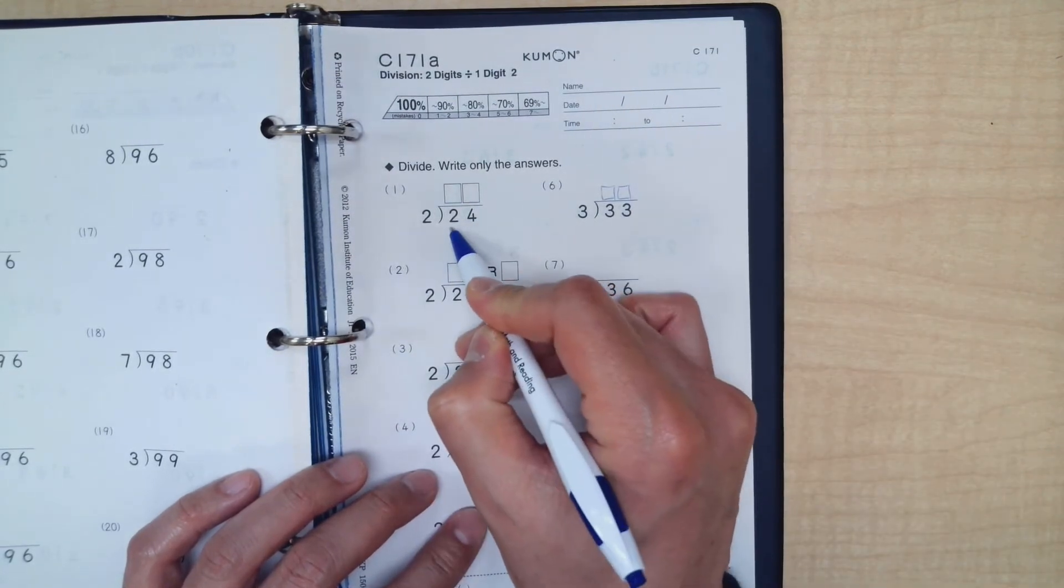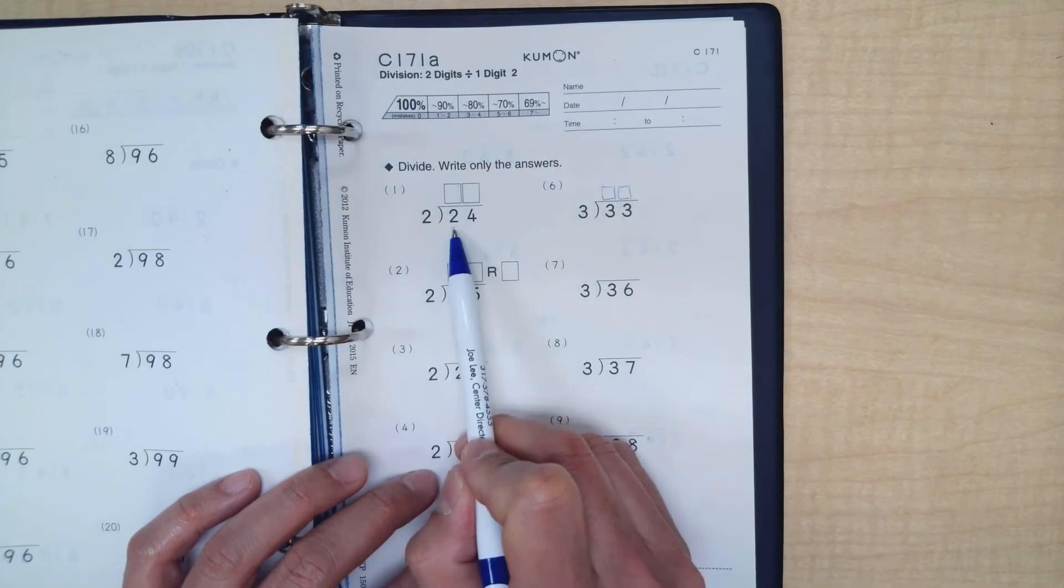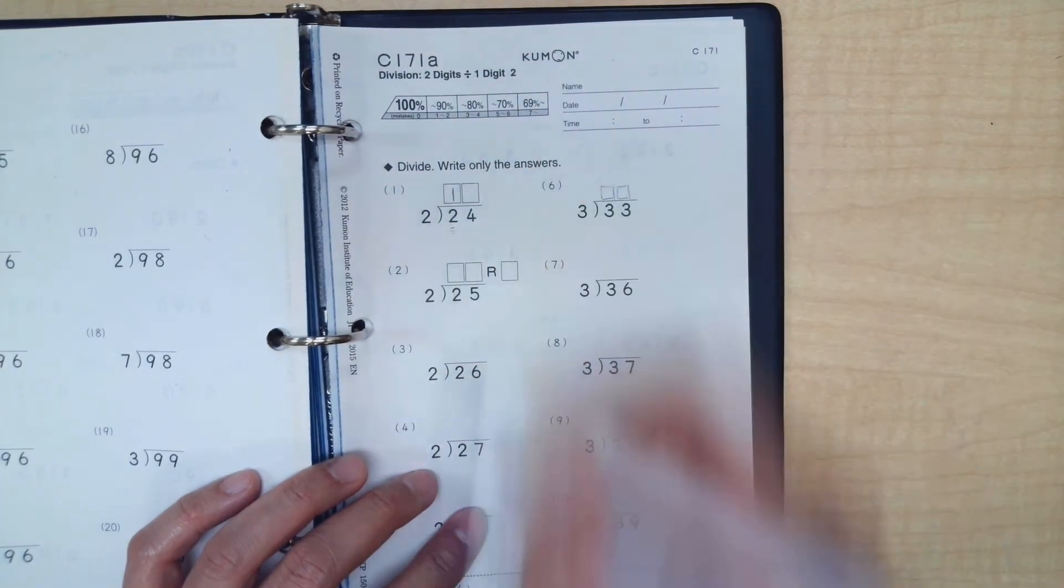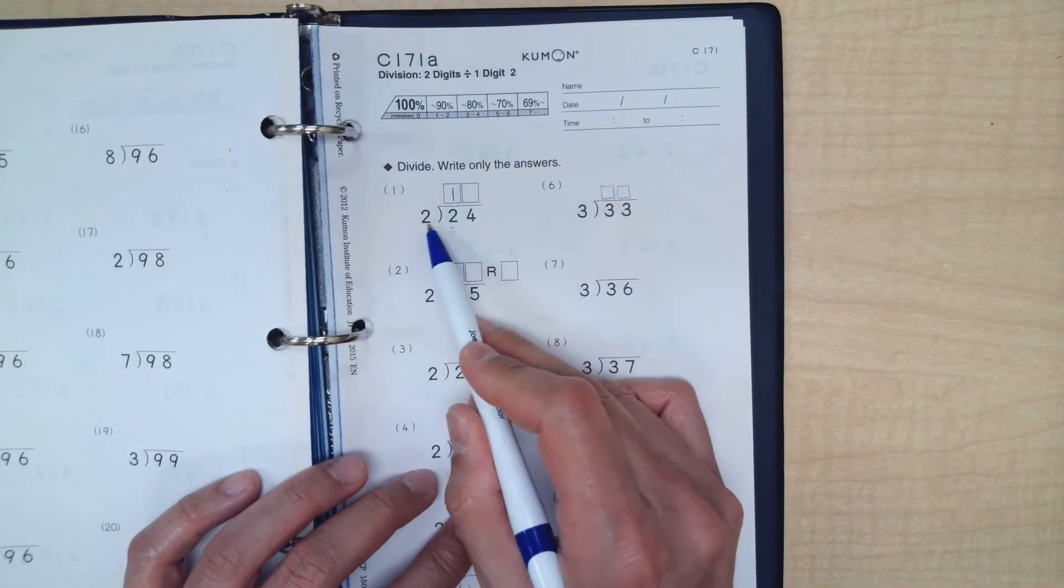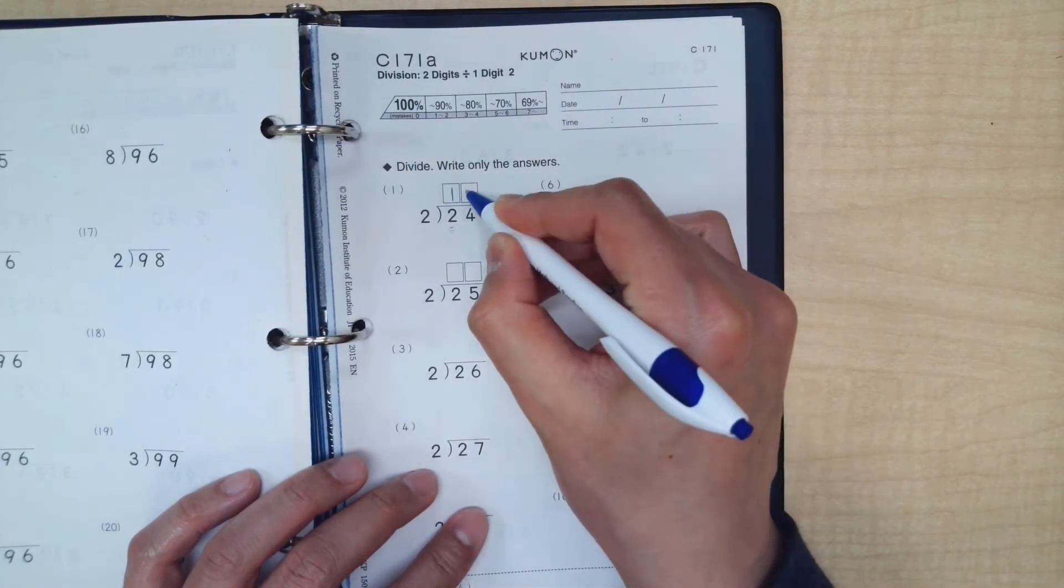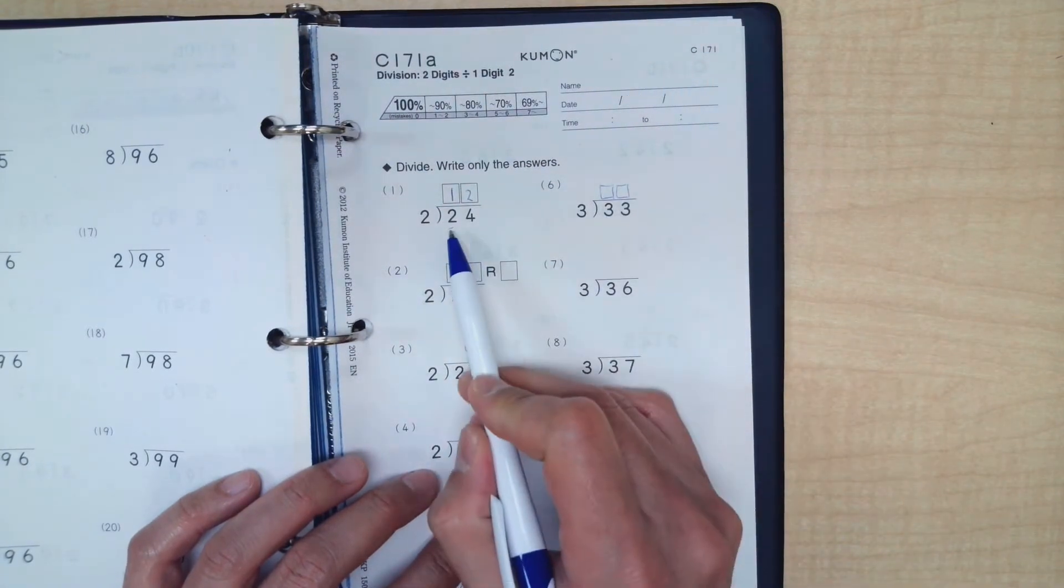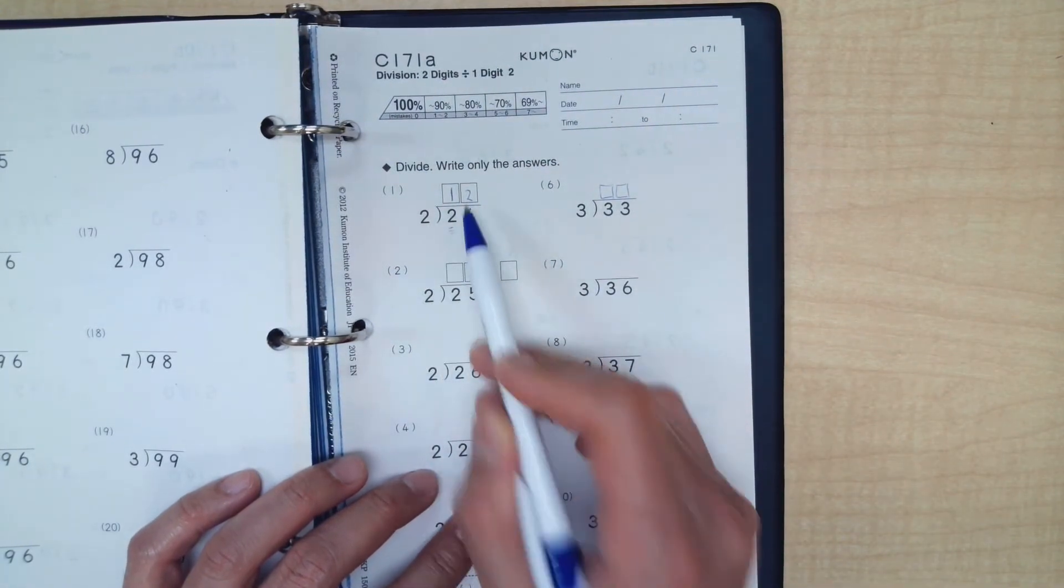You would always start with the left side of the number, number four. What's two divided by two? I hope you said it's one. What's four divided by two? It's two. That's because two times two is four. And that's clean division. Twenty-four divided by two is twelve.